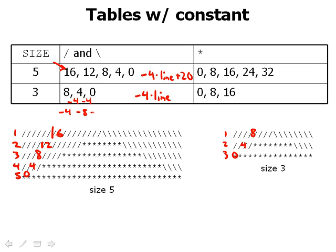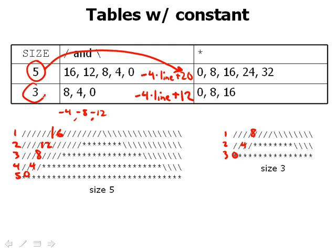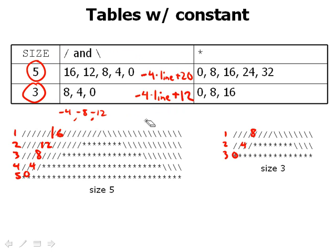At size 3, negative 4 times the line gives negative 4, negative 8, negative 12. To convert those to 8, 4, 0 we add 12 each time. So at size 3 the expression is negative 4 times line plus 12, and at size 5 it was negative 4 times line plus 20. The part that changed is: at size 3 we add 12, at size 5 we add 20 — that's 4 times the size. So the general expression is negative 4 times line plus 4 times SIZE.